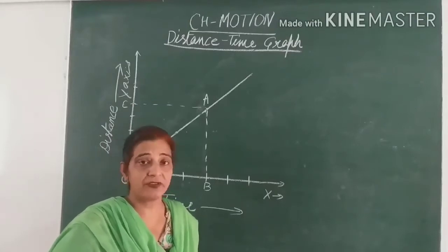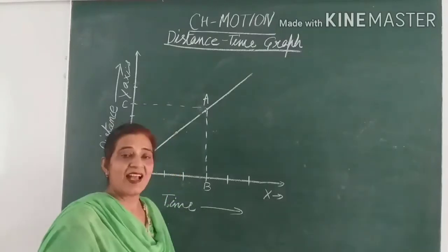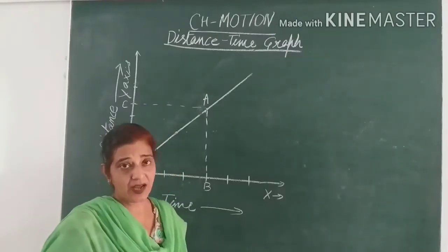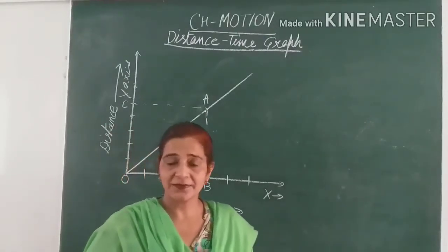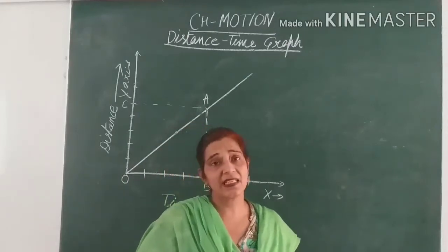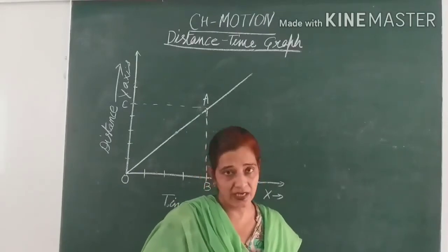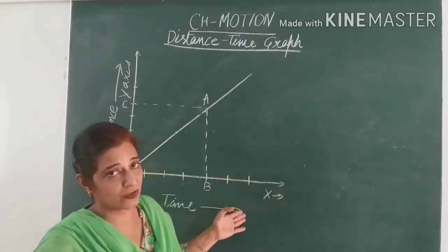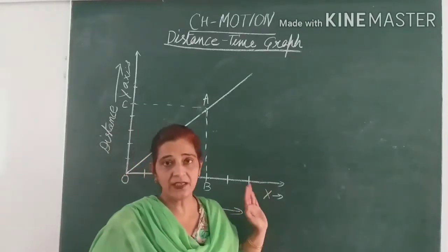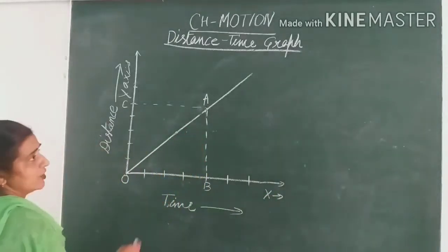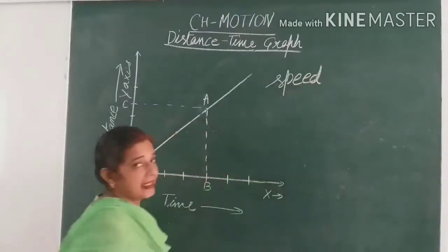When we need to find out speed with the help of a graph, we draw this distance-time graph so that we can easily find it out. The slope or gradient of the distance-time graph gives us the speed of a moving body. Now what is slope? Yes, that is just y-axis upon x-axis. That will give us the slope or gradient of a graph. So here also, the distance-time graph's slope tells us about the body's speed at a particular point.